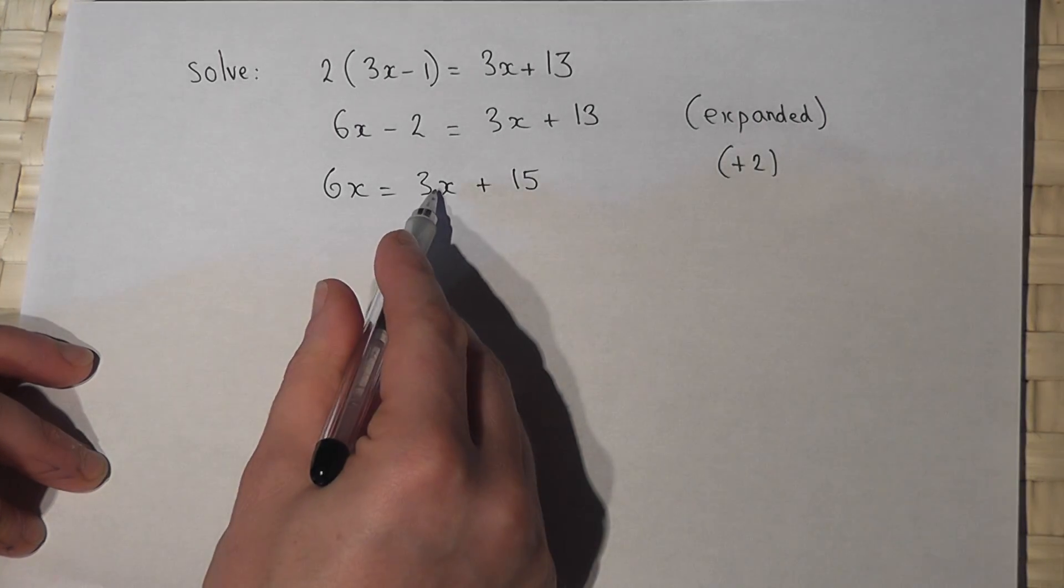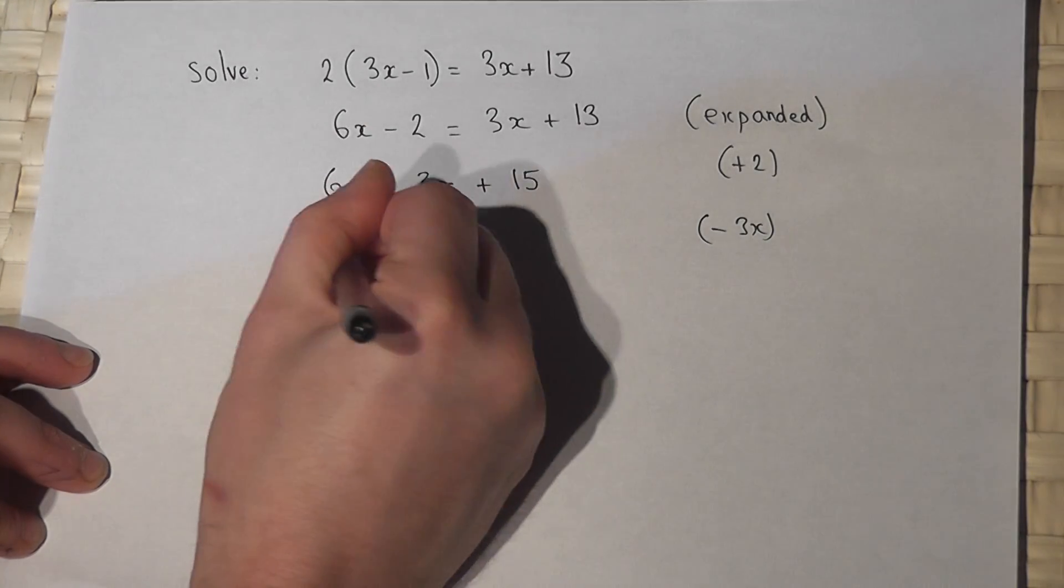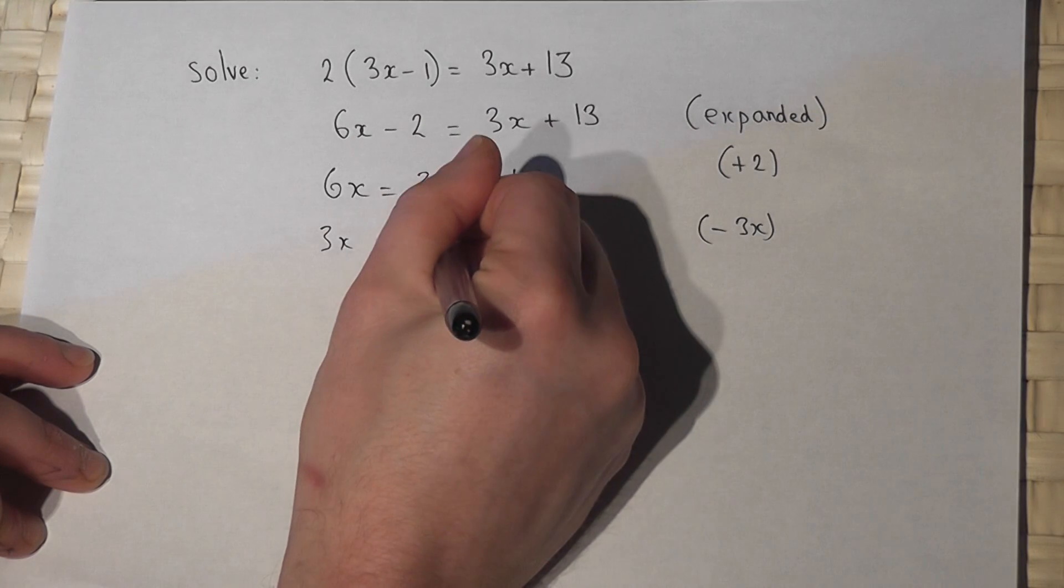I then take away this 3x to the other side. So 3x which is 6x take away 3x. That cancels off. We're left with 15.